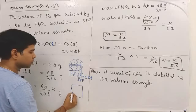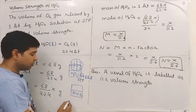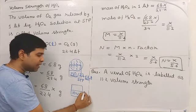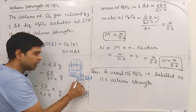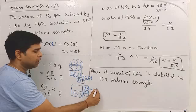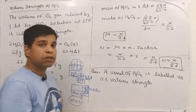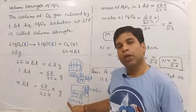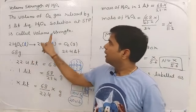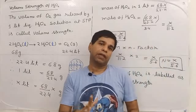Suppose a container is labeled '10 volume strength.' This means if you take 1 liter of the liquid H2O2 solution from this container and place it at STP, the volume of oxygen gas that comes out is 10 liters. Similarly, if '20 volume strength' is written on a container, then 1 liter of that H2O2 liquid at STP will release 20 liters of oxygen gas.